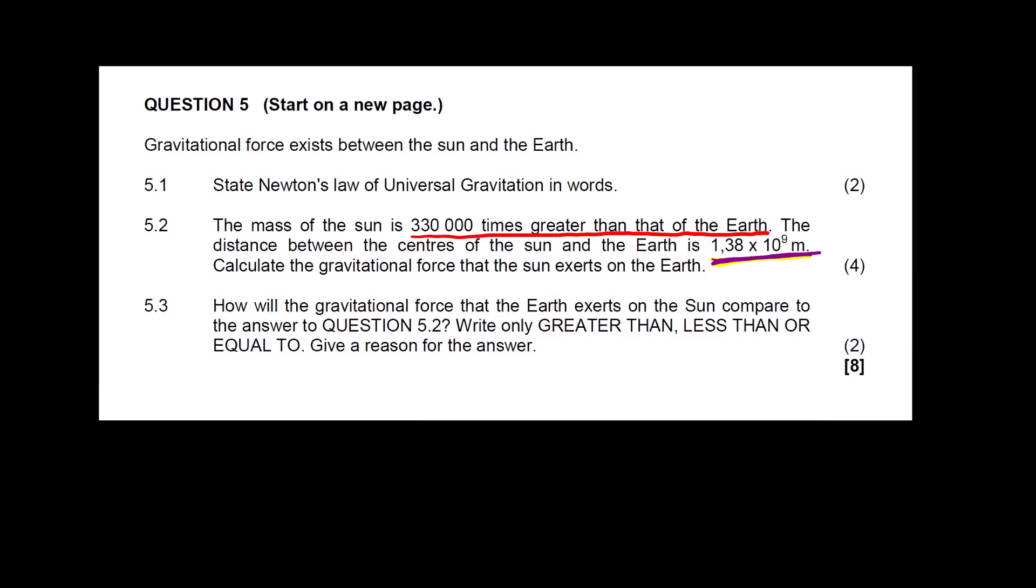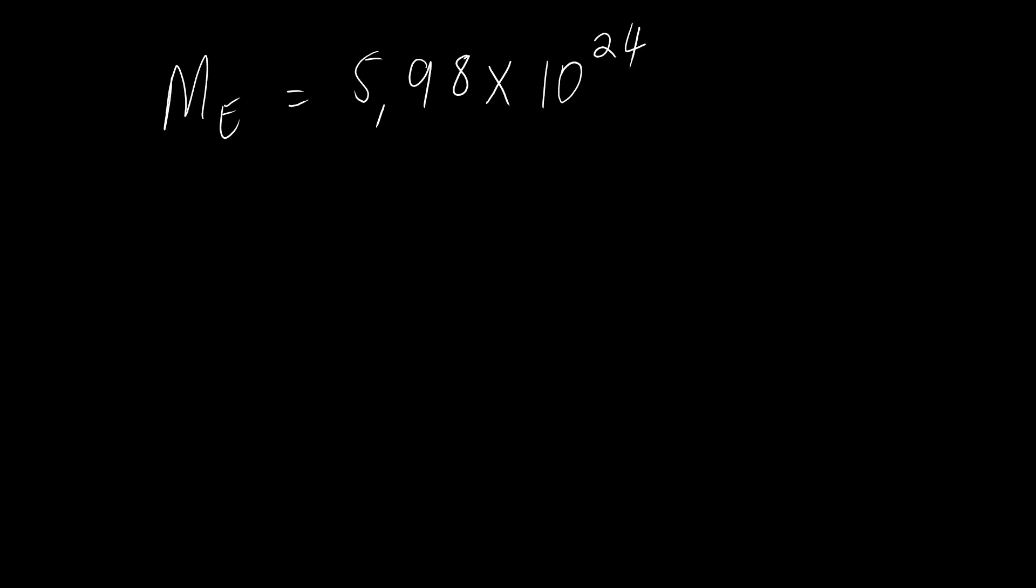Before we answer this question let us go through a crash course on this chapter. What is important is to know that the mass of the Earth is always given. When you look at your formula sheet the table of constants you will see that the mass of the Earth is 5.98 times 10 to the power 24 kg. In this question we are only interested in the mass of the Earth.